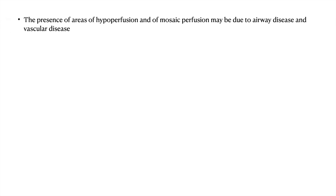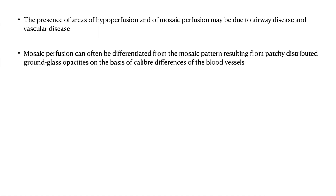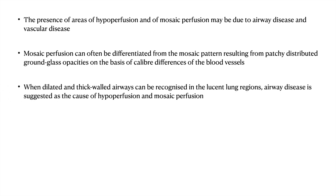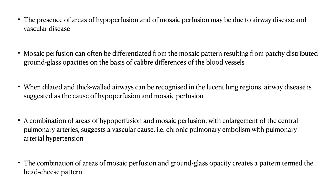The presence of areas of hyperperfusion and mosaic perfusion may be due to either airway disease or vascular disease. Mosaic perfusion can often be differentiated from mosaic pattern resulting from patchy distributed ground glassing on the basis of the caliber of the blood vessels. When dilated and thick-walled airways can be recognized in lucent lung regions, airway disease is suggested. A combination of areas of hyperperfusion and mosaic perfusion with enlargement of the central pulmonary arteries suggests a vascular cause, something similar to chronic pulmonary embolism with pulmonary arterial hypertension. The combination of areas of mosaic perfusion and ground glass opacity creates a pattern which is termed the head cheese pattern.